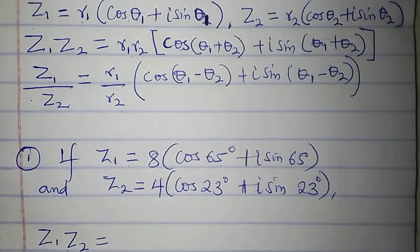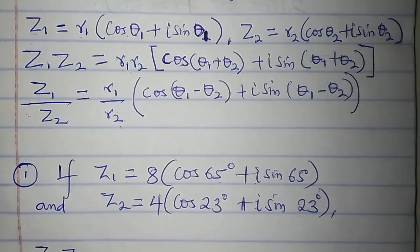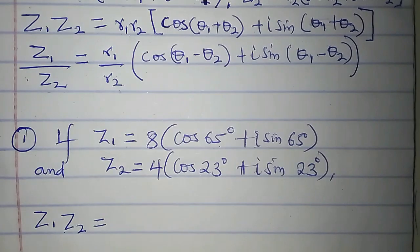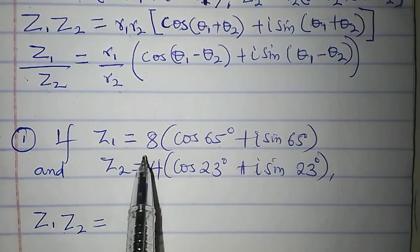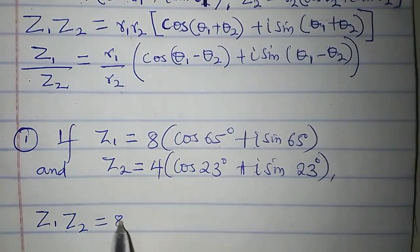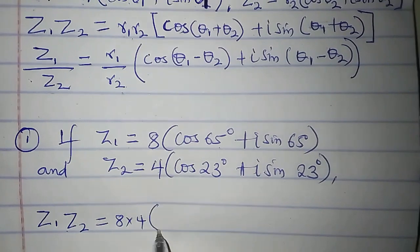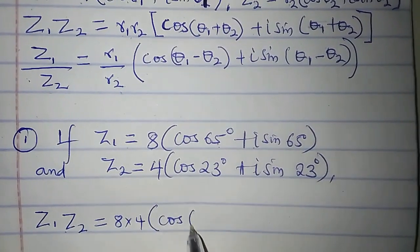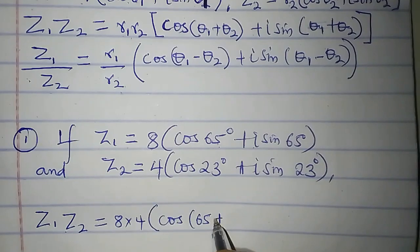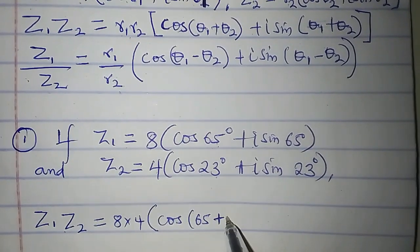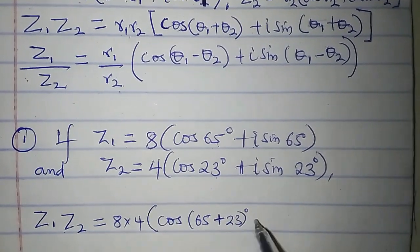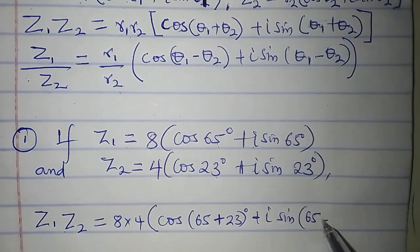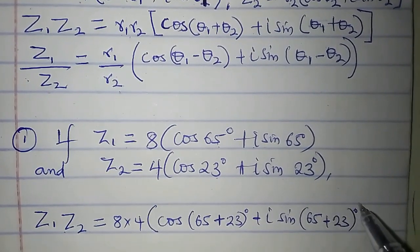Based on the principle of multiplication, I will multiply the moduli and add the arguments. So r1 is 8 and r2 is 4, giving 8 times 4. The first argument is 65 degrees and the second is 23 degrees, so we have cos(65 + 23)° + i sin(65 + 23)°.